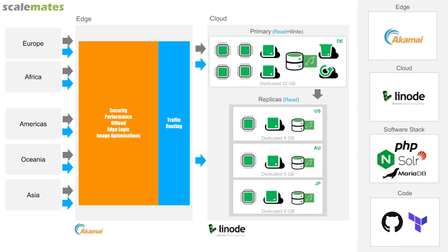I set up high availability for the primary — if the primary goes down I really have a problem. I decided at this stage not to duplicate the replica instances, because if Australia goes down they would fail over to Japan, the US, or Germany. I could add high availability, but that duplicates costs. It's always a trade-off between performance, availability, scalability, and cost.